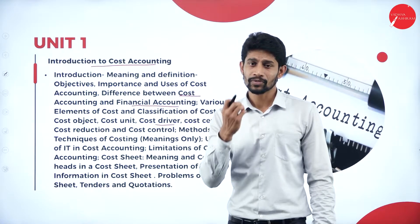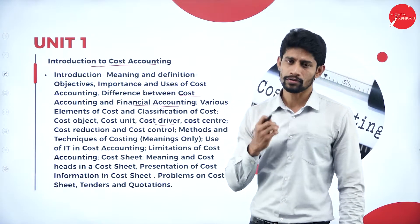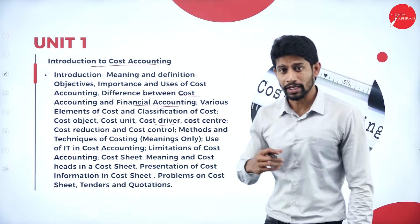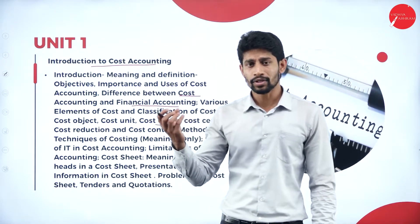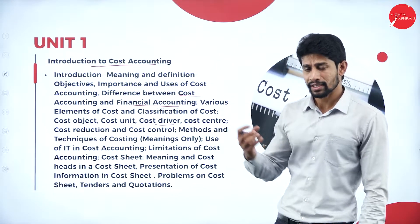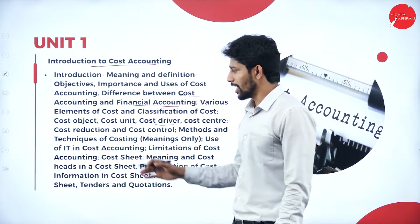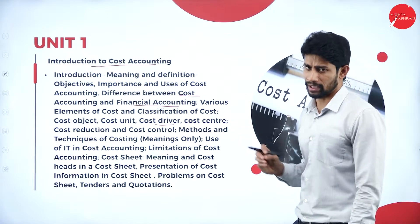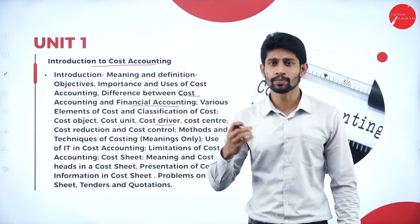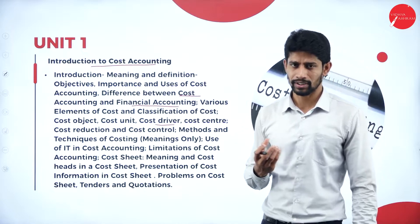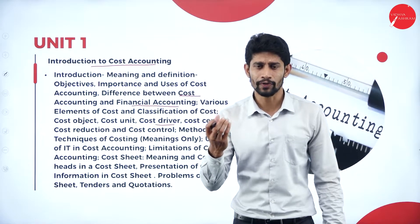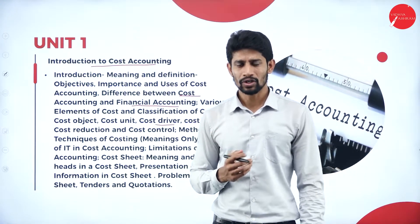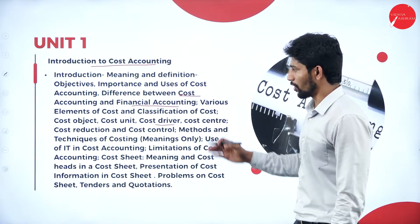In Unit One we are going to learn all the basics of cost accounting — the meaning, objectives, and importance of cost accounting, and which elements come under cost accounting. We are also going to solve a cost sheet. A cost sheet is nothing but the total cost incurred to produce a product. We find the total cost by following a systematic format and order.